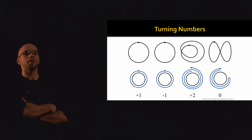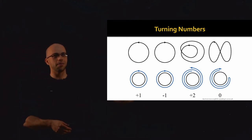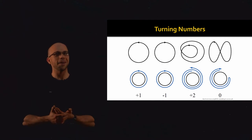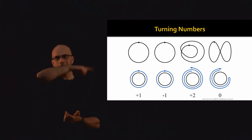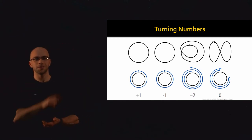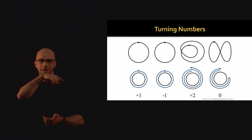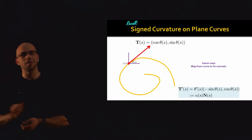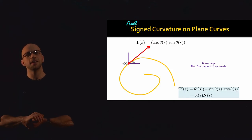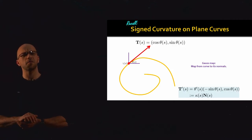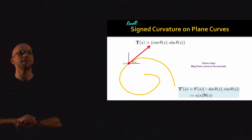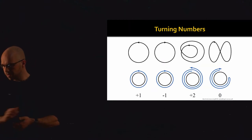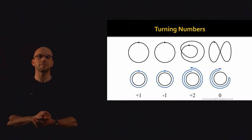Some examples of turning numbers are shown here — this is a nice topological property of curves. A curve with turning number 0 never makes a loop all the way around; a turning number of 2 means it loops twice, and so on. One question we might ask: can we come up with some definition of discrete curvature on a polyline that conserves this turning number theorem in some sense?